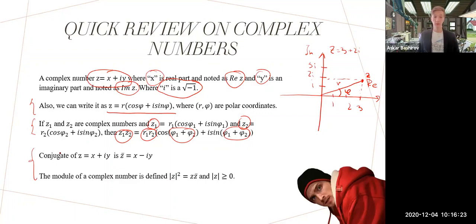Now let's look at conjugate and modulus. The conjugate of z is noted like this and the imaginary part has a different sign. We just multiply by negative one the imaginary part and we get the conjugate.